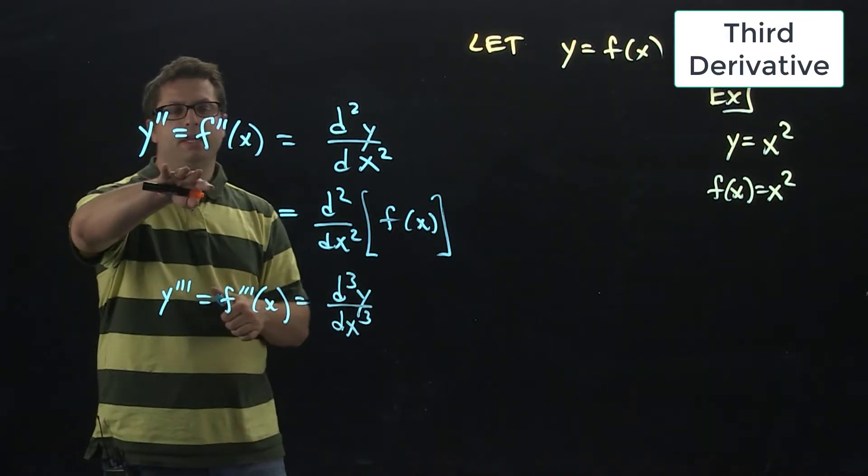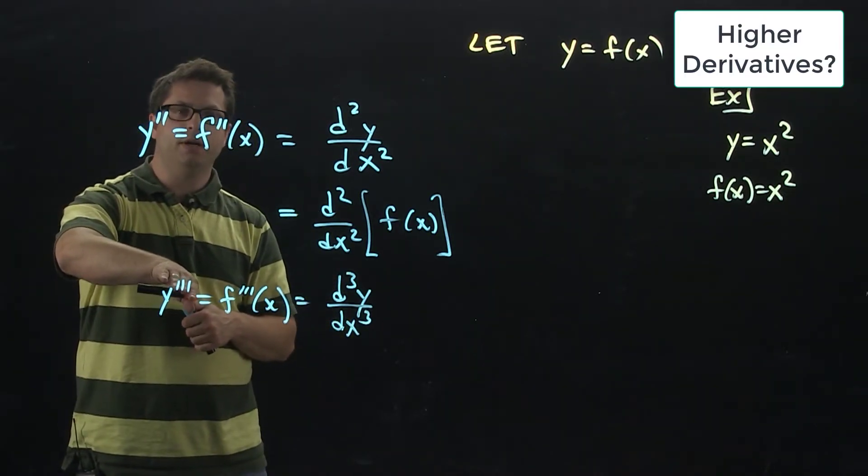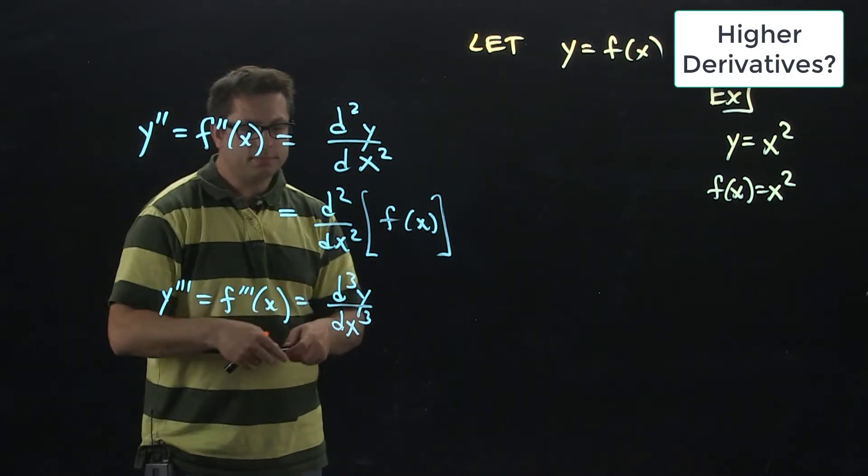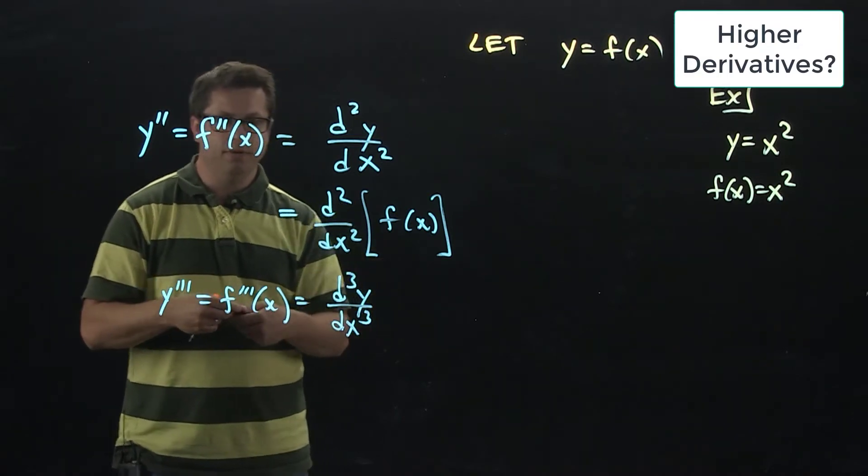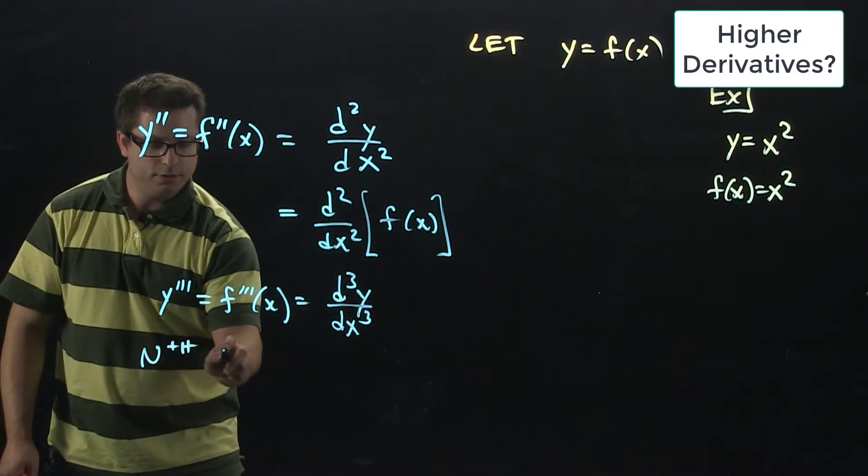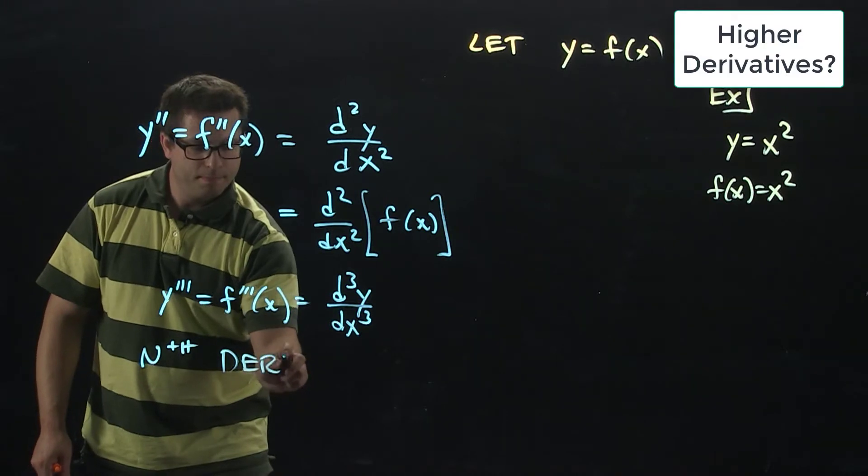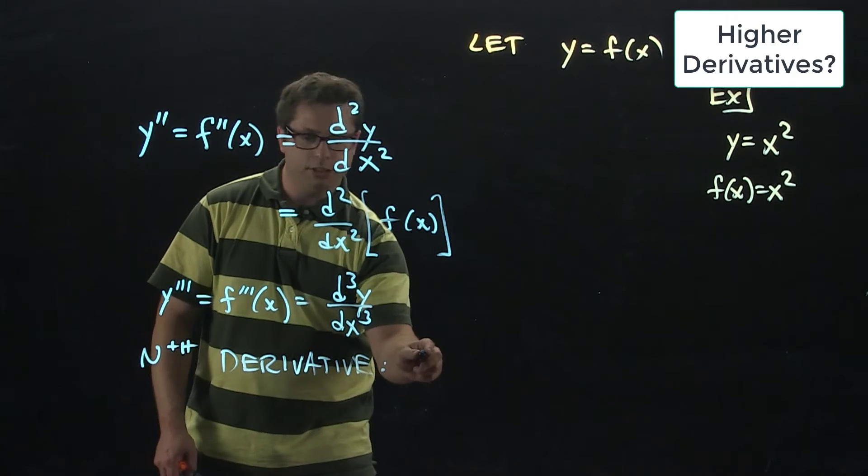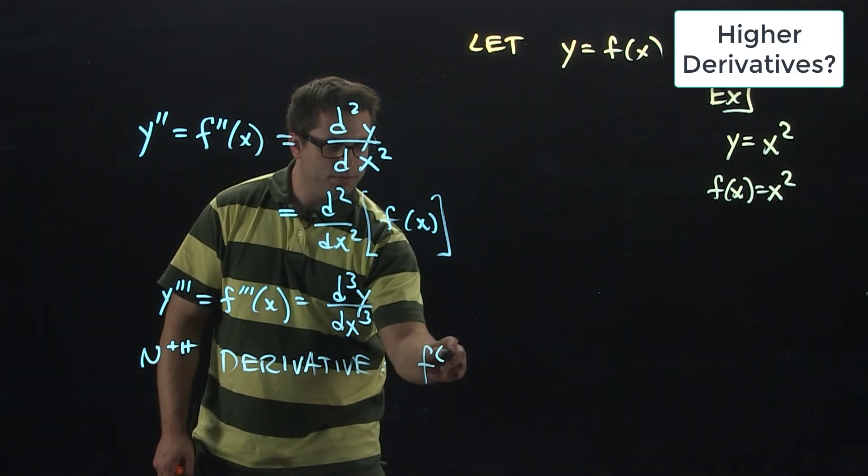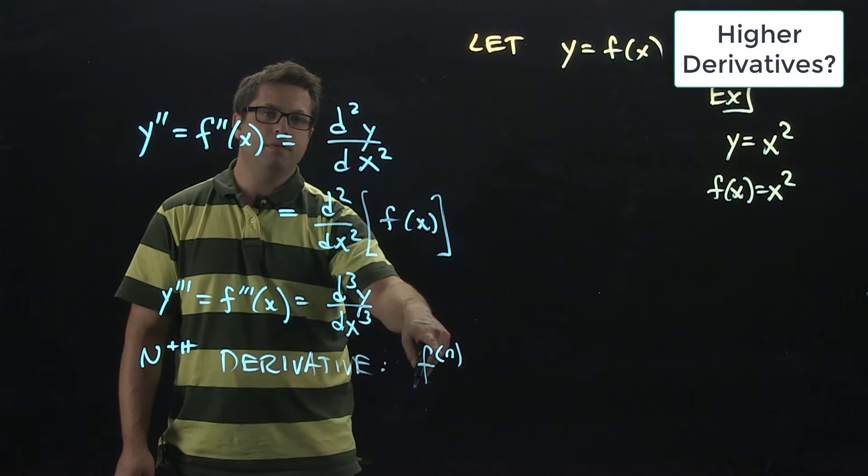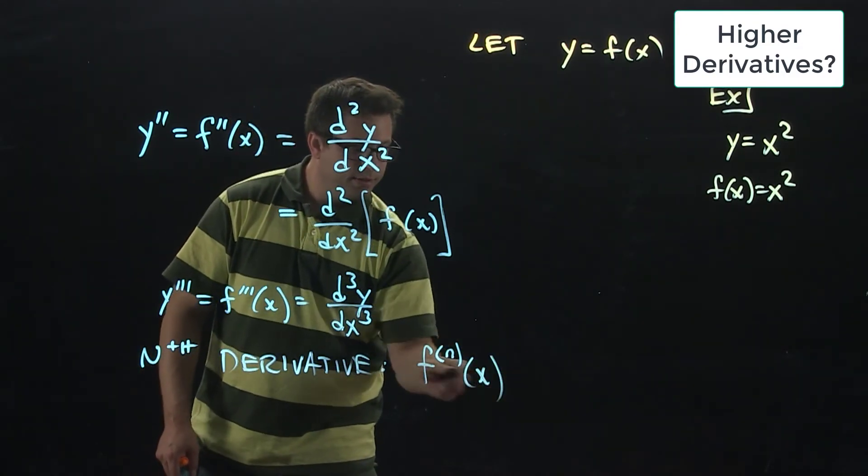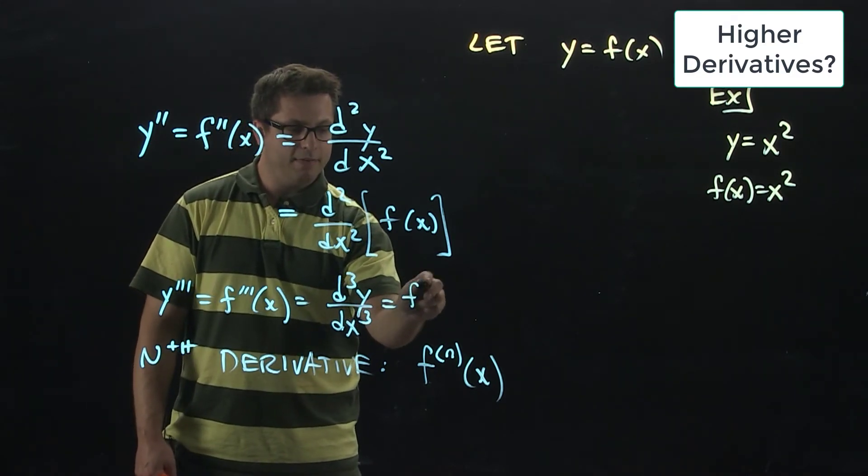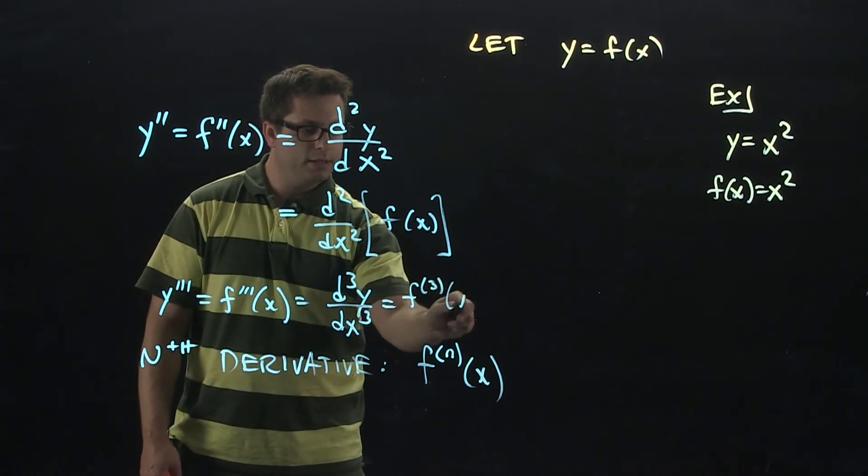What about even higher derivatives? Because you're going to run out of space. You're not going to want to put 4 primes or 10 primes. At this point, if you wanted the nth derivative, we would use this notation. We would have the f, but instead of the primes, we would put the derivative we want, but in parentheses. The third derivative up here could also be f with the little 3 x.